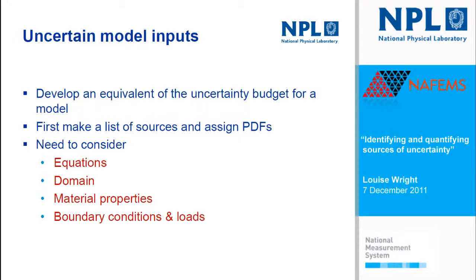In terms of applying the uncertainty budget to a finite element model, you can pretty much use the same ideas without adapting them. The first problem is to make a list of the sources and then assign the PDFs to them. There are four main areas to consider: the equations, the domain, the material properties, and the boundary conditions and loads. I'll go into some of the issues affecting each of those in the rest of this talk.